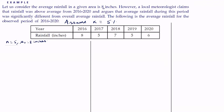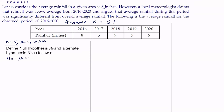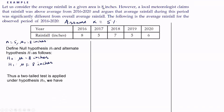First let us write the hypothesis. The null hypothesis H₀: μ = 8 inches and alternate hypothesis H₁: μ ≠ 8 inches. By seeing the hypothesis we can see that it is a two-tailed test. Thus a two-tailed test is applied under hypothesis H₀.